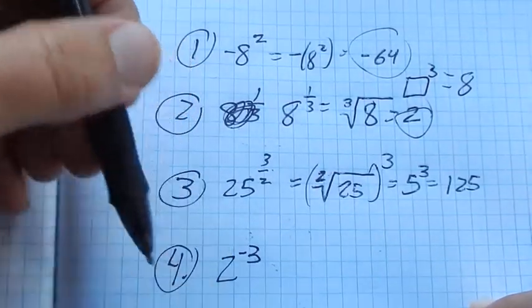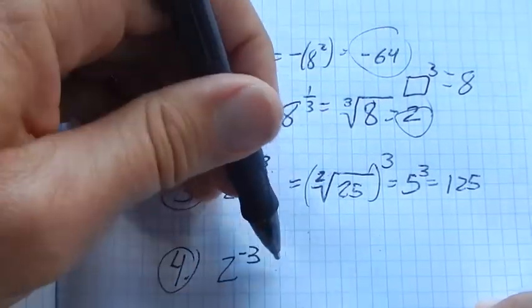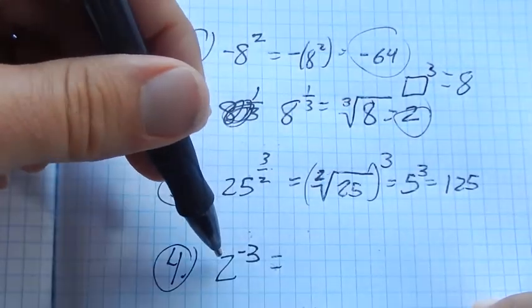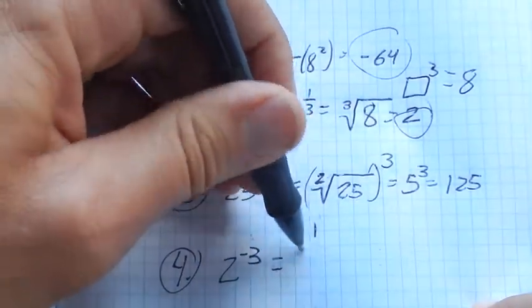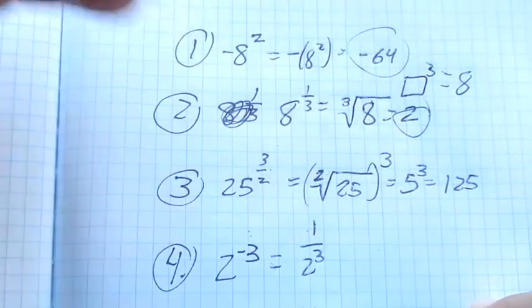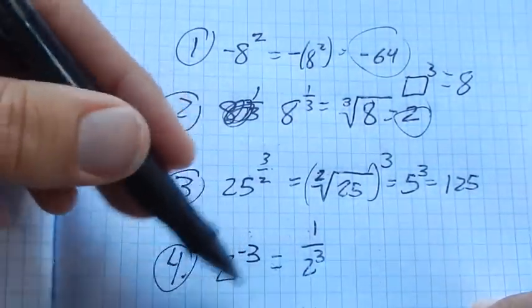And then last question. 2 to the negative 3. Negative exponents, what they do is they have us take the reciprocal of what's to that power. So this is the same as 1 over 2 cubed. It's like we flip that part of the fraction.